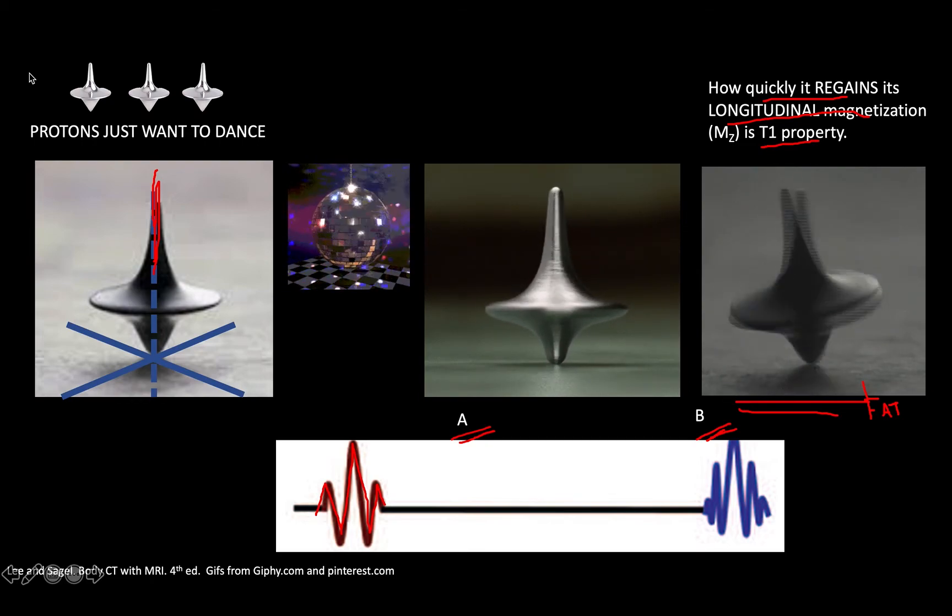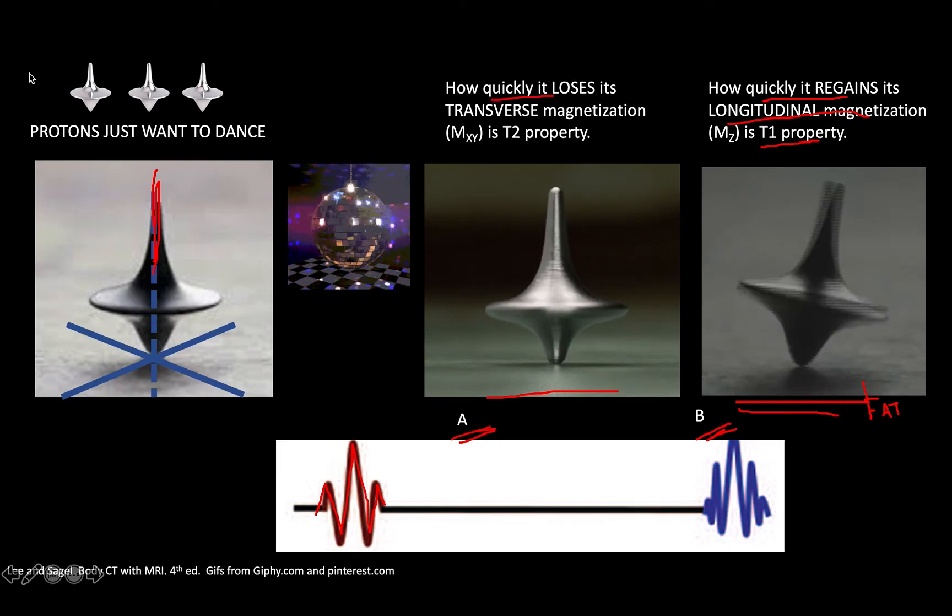Now what about this top A? After receiving the initial pulse, the movement here in the transverse plane will eventually be lost. This time to lose its transverse magnetization is called the T2 relaxation property of that proton. How quickly it loses its transverse magnetization is its T2 relaxation property.